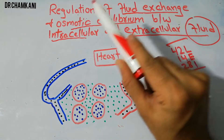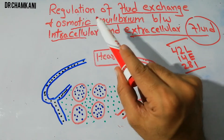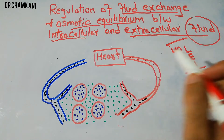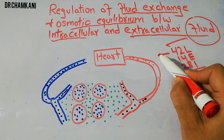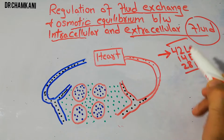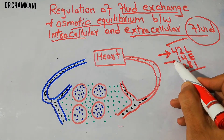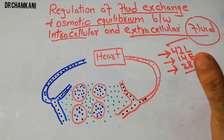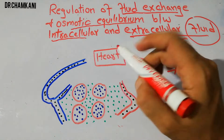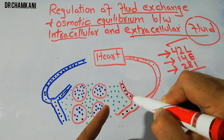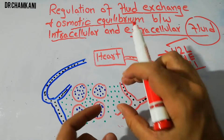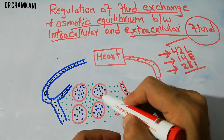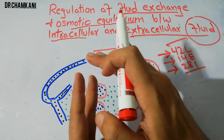Now, how is the body basically regulating the fluid exchange and how is it maintaining the osmotic equilibrium between the intracellular and extracellular fluid? Because the total fluid has to be maintained at 42 liters, the extracellular fluid has to be 14 liters, and the intracellular has to be 28 liters. While the fluid is coming from the heart, it is being filtered — all the fluid is coming into the interstitial fluid, then the exchange is occurring between the fluid and the cells, and then the remaining fluid is going back to the heart.